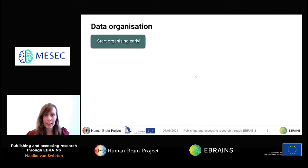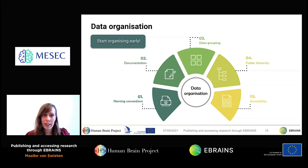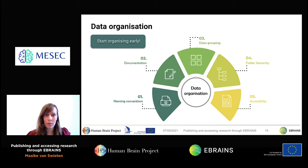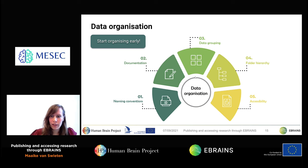Data organization is key to making your data as FAIR as possible, and it's important to start this process early. Data organization relies on five key principles: appropriate use of naming conventions to avoid ambiguity and enable automated processes; extensive human-readable and machine-readable documentation; grouping data based on common characteristics such as technique, modality, or subject; indicating relationships between data files using the right folder hierarchy; and increasing accessibility by using open file formats and reducing the number of different file types.